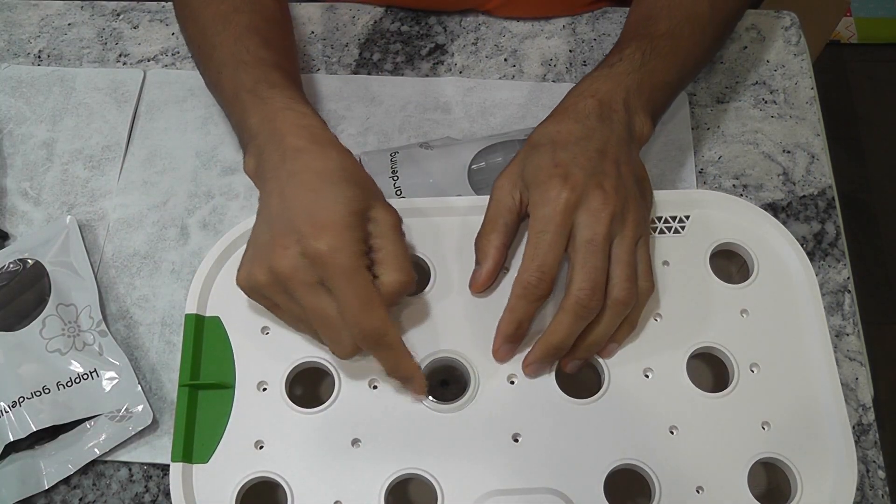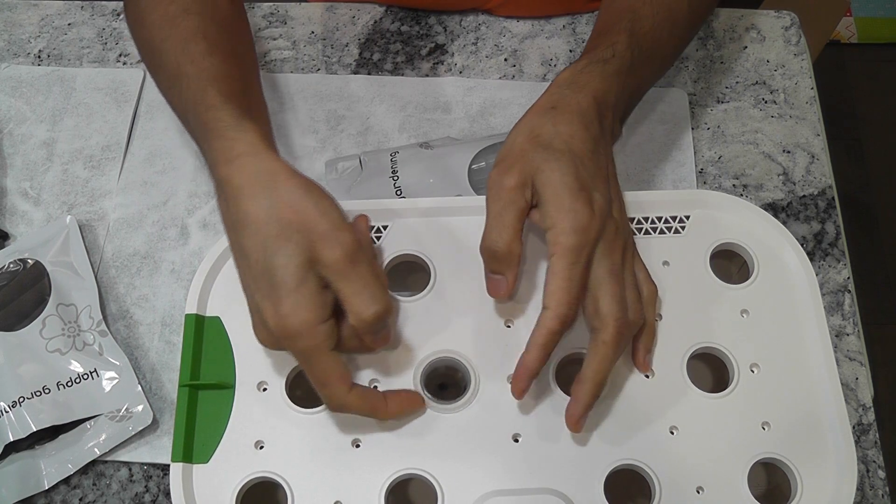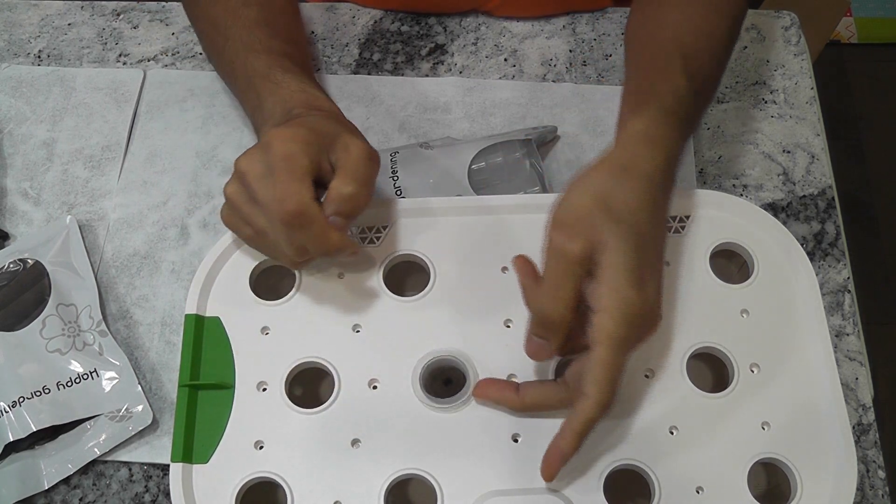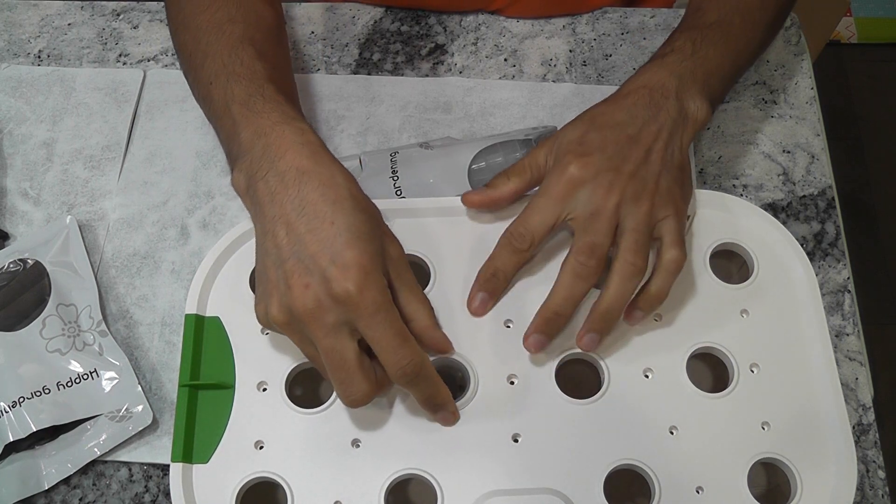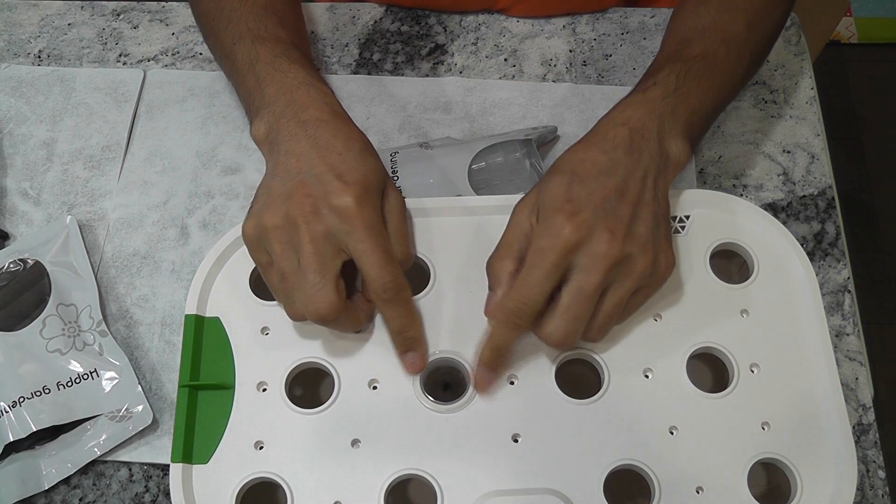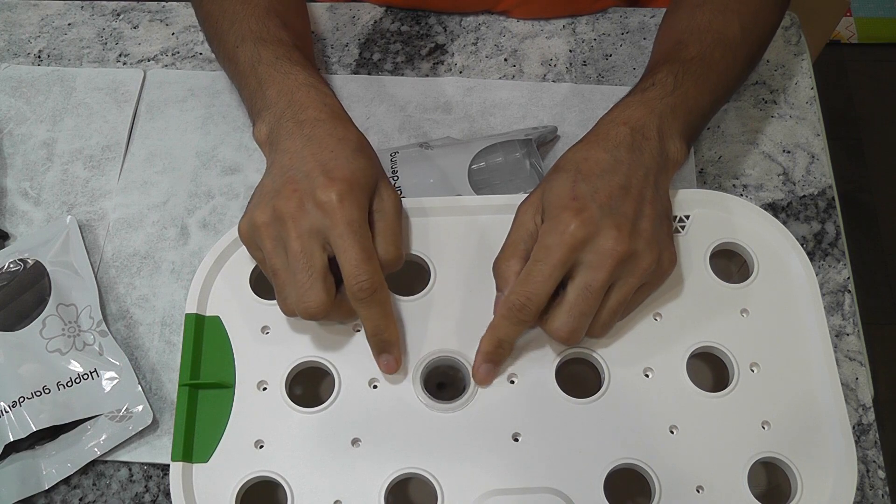Let's check the pods. It is not that stable. If the plant gets heavy and leans on one side, this pod will be lifted a little bit. But it won't be an issue for smaller plants like basil, spinach, etc.